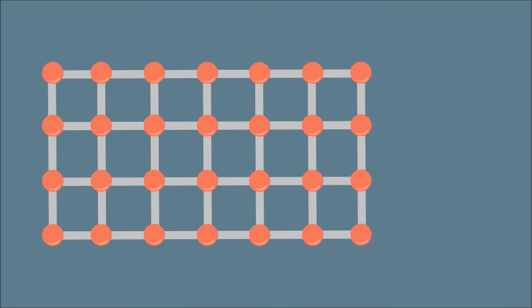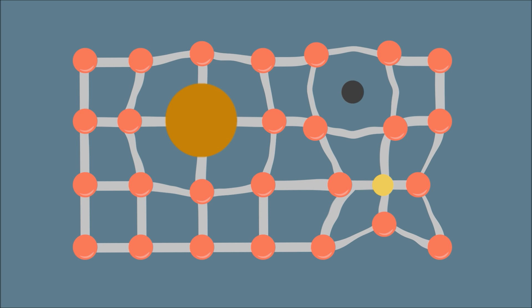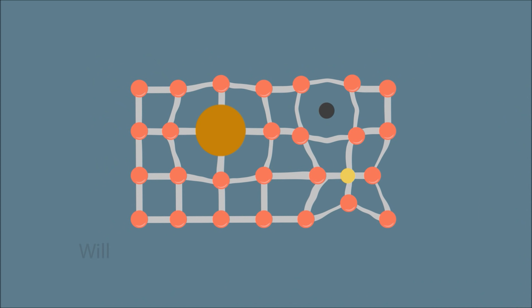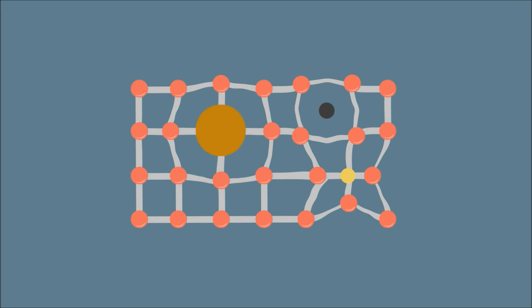Solid solution strengthening is applied when we add other chemical elements to a metal. As discussed in the introduction to materials module, the elements added can either fall between the atoms of the bulk material or replace the atoms. Within steel, carbon atoms fall between iron atoms (interstitial), and nickel atoms replace iron atoms (substitutional). This will cause distortion in the atomic structure, which interacts with the dislocations, preventing dislocation movement and strengthening the steel.